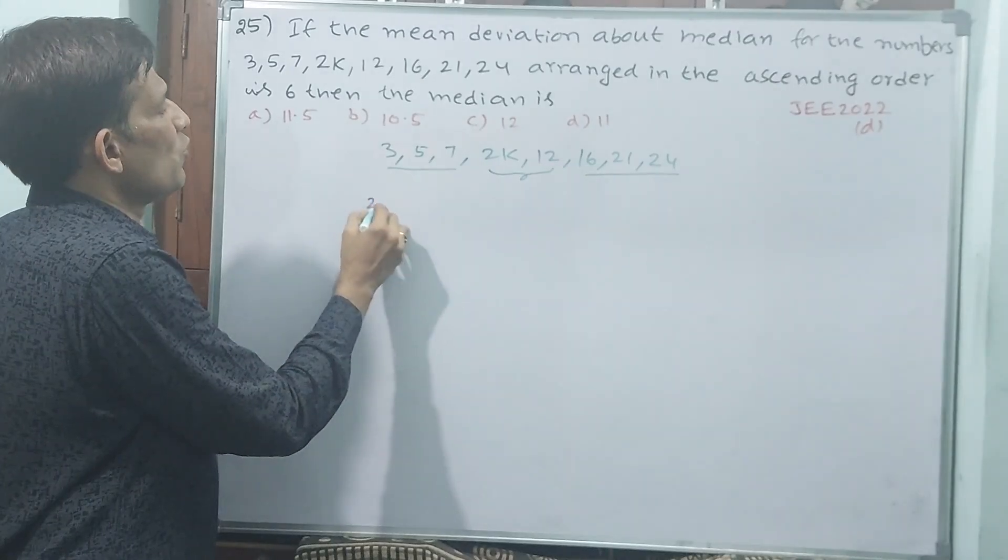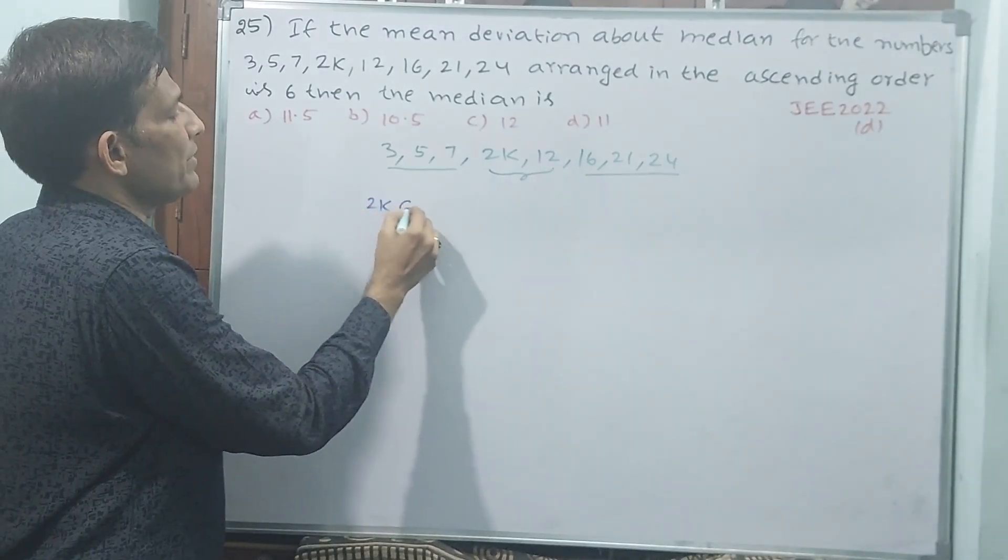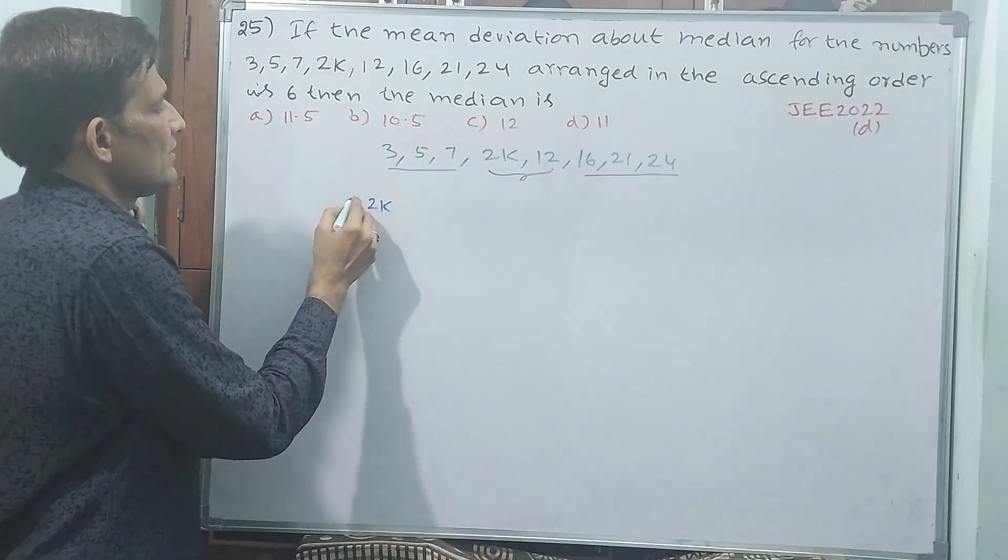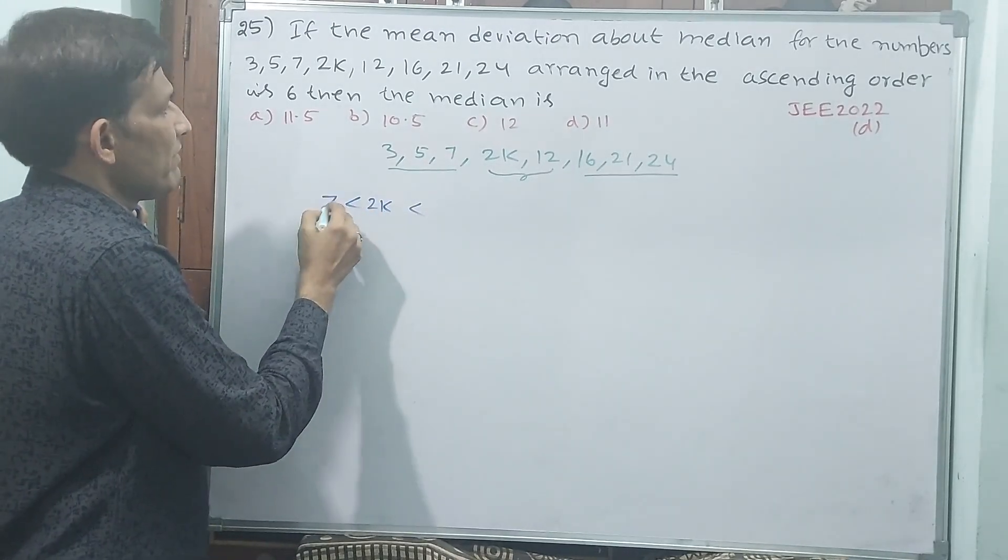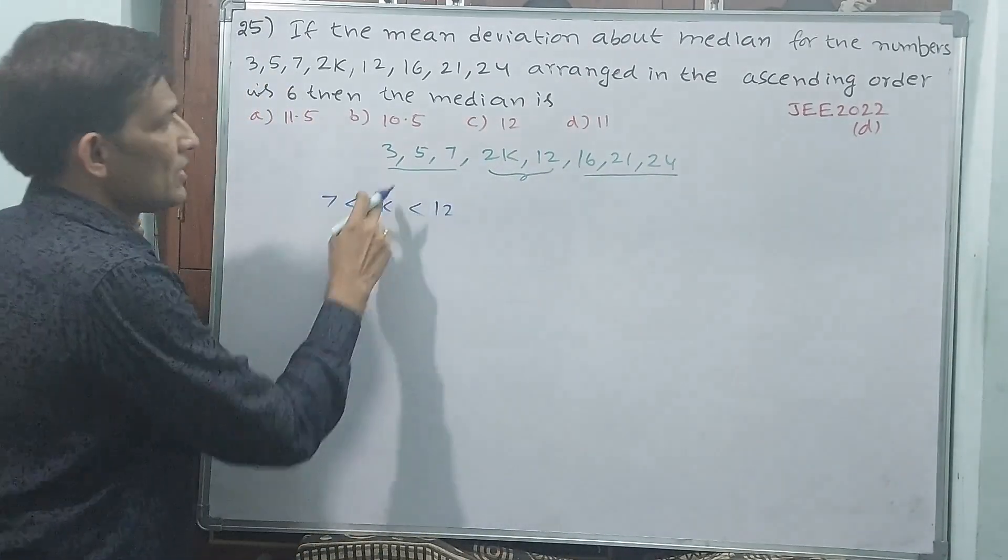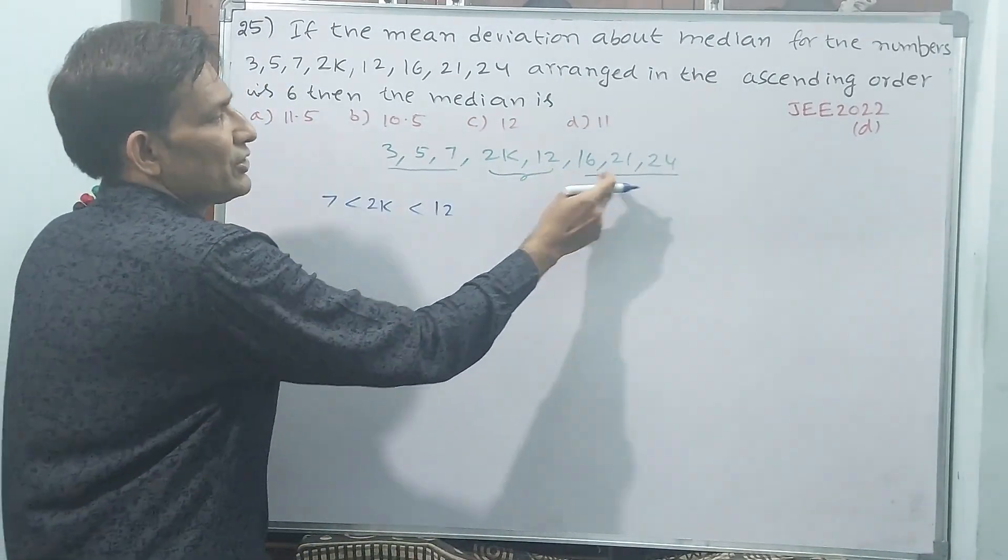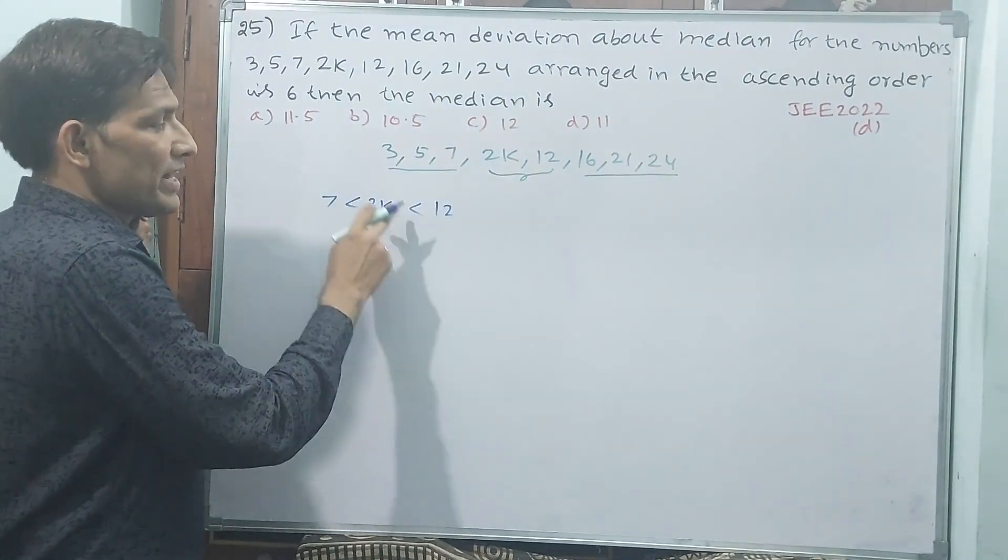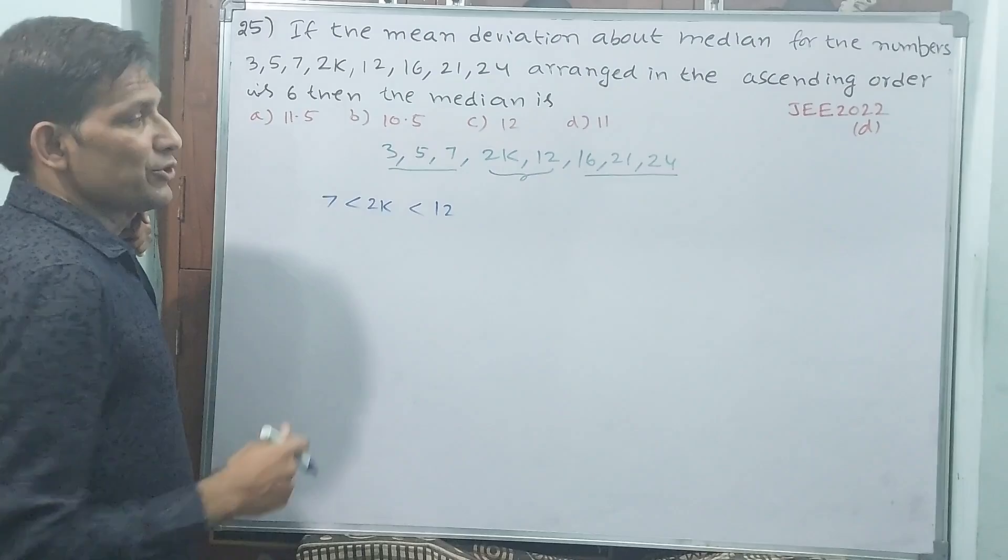2K is even number means it implies greater than 7 and less than 12 has to come. Why? Because increasing order - 3, 5, 7, 12, 16, 21, 24 all are in ascending order only. That means 2K should be greater than 7 and less than 12.